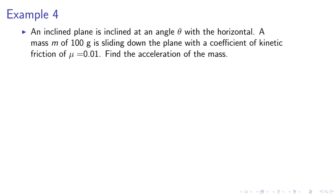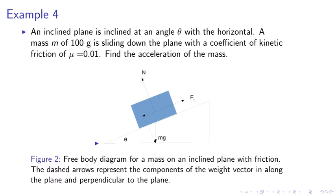Example 4, an inclined plane is inclined at an angle theta with the horizontal. A mass m of 100 grams is sliding down the plane with the coefficient of kinetic friction of mu equals 0.01. Find the acceleration of the mass. So we can consider the free body diagram again of this in figure 2. We have the normal force, mg and Ff, which is the frictional force.